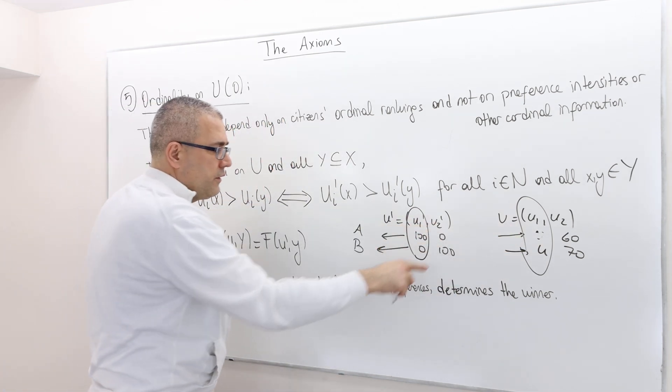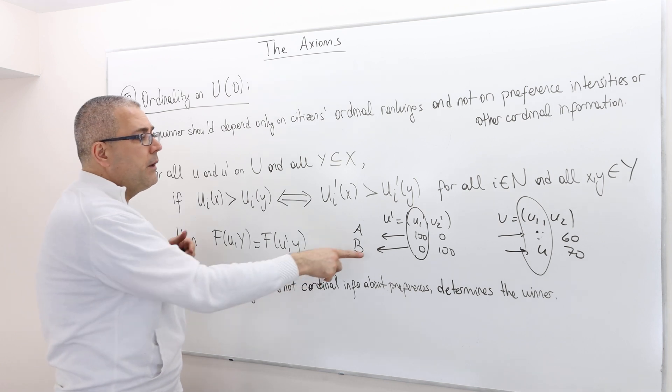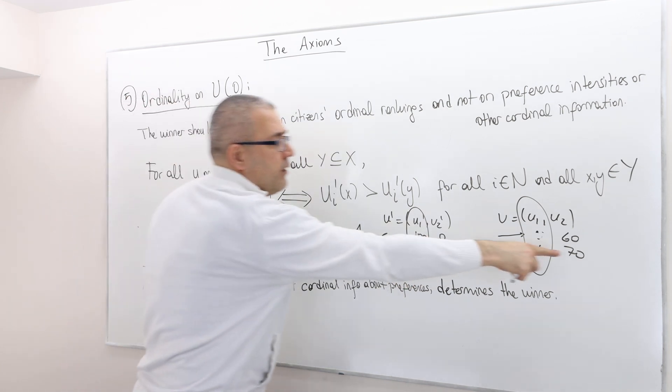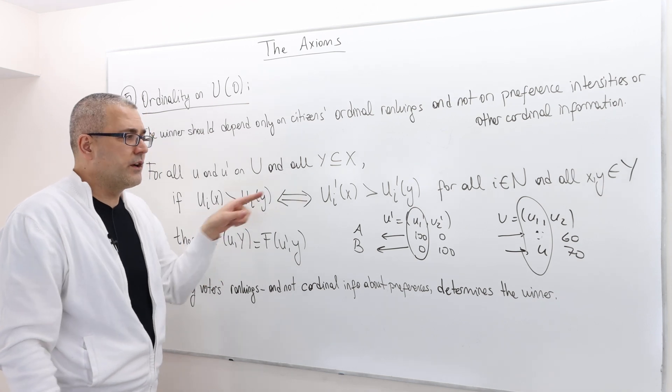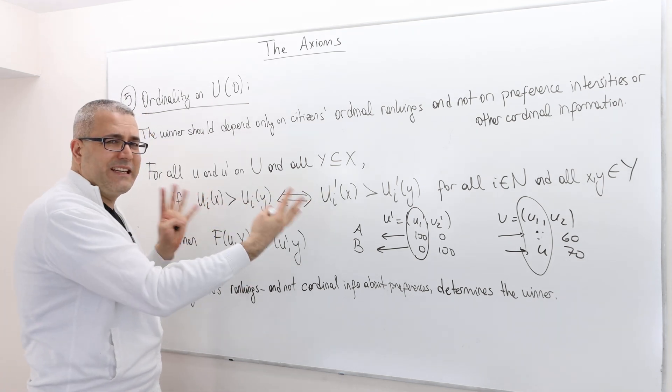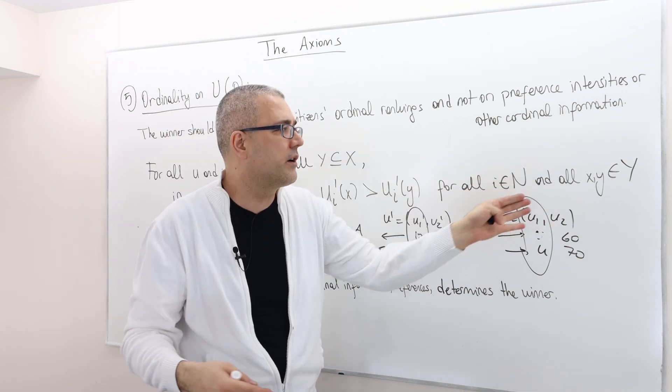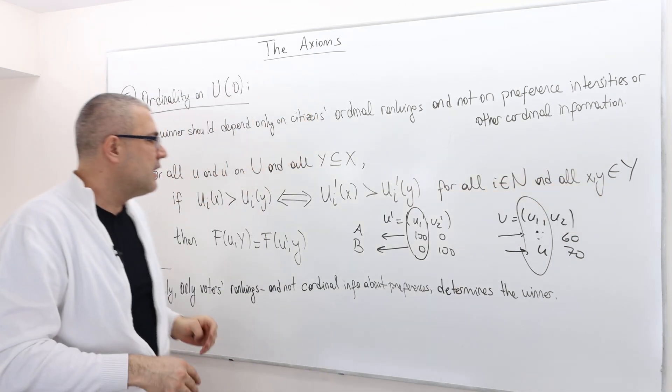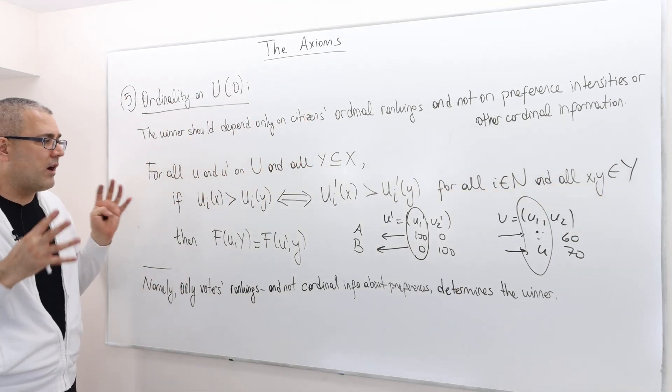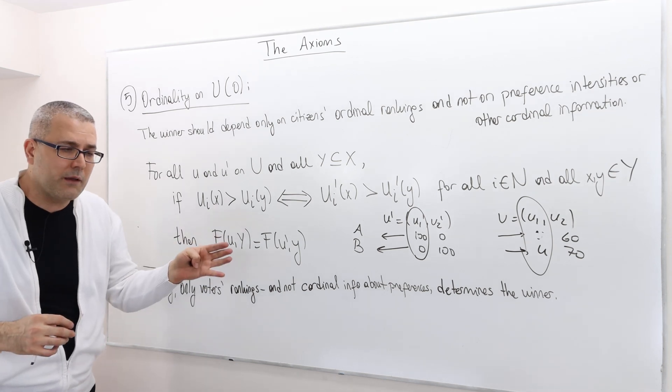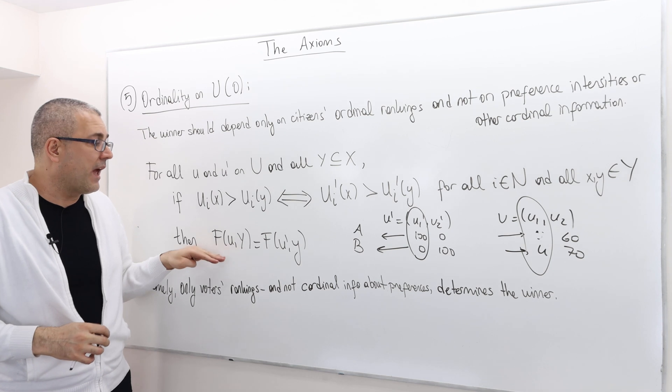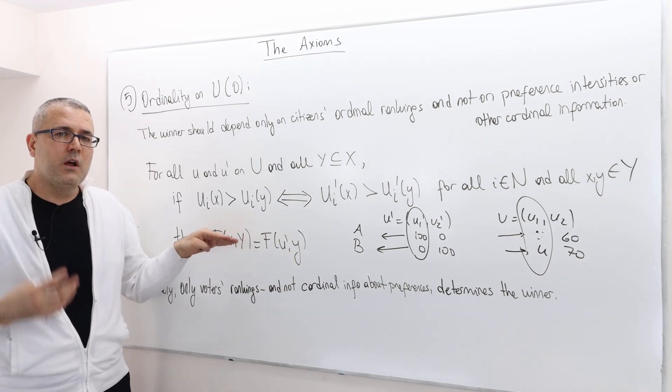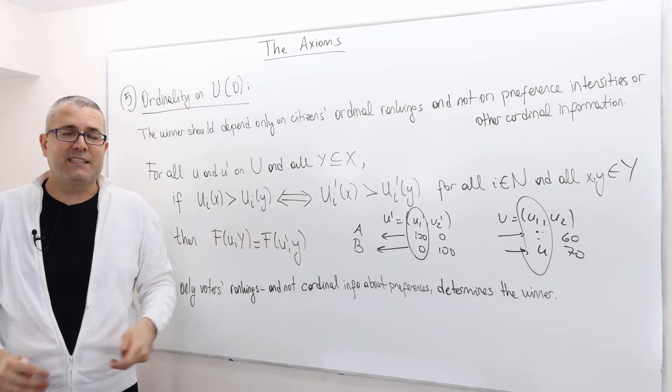Under U prime. So this is what this condition is, and it's true for any voter and for any two candidates. So if this is the case, well, then we say U and U prime have actually exactly the same ordinal information, and so the voting rule should suggest exactly the same outcome.